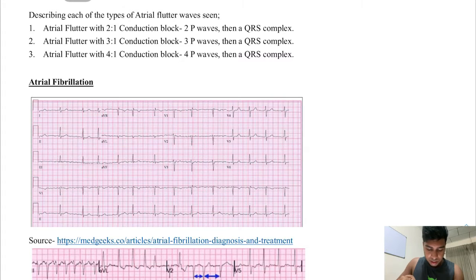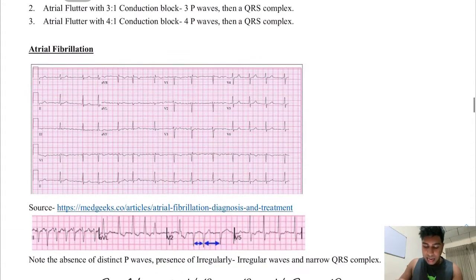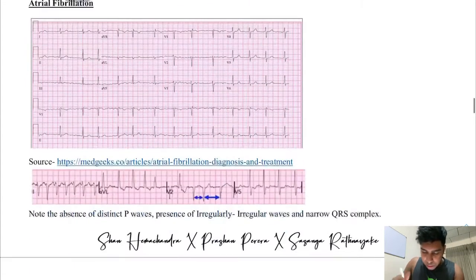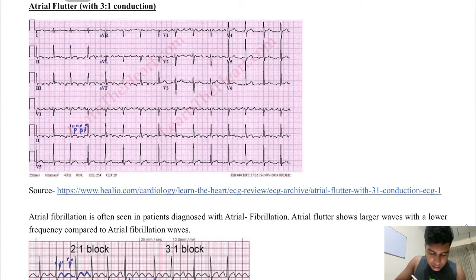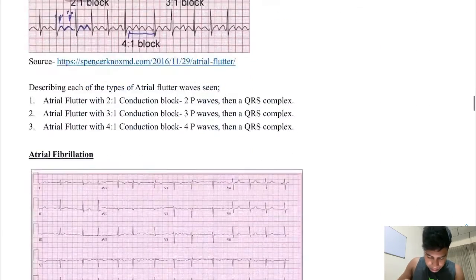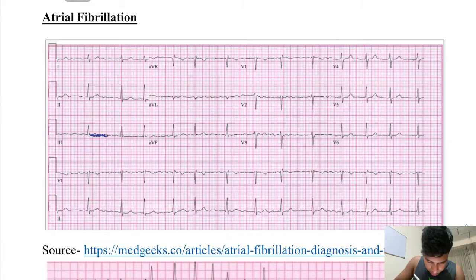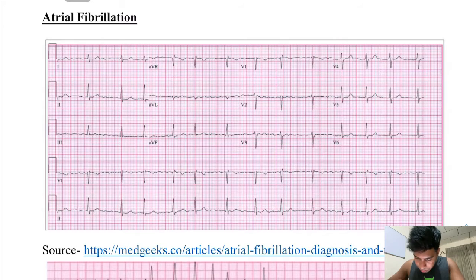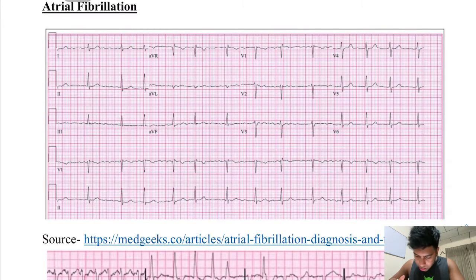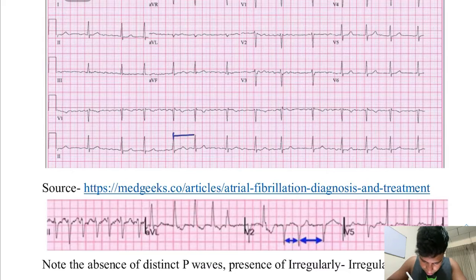Next, we have atrial fibrillation, and this is called an irregularly irregular wave. These waves are going to be smaller than that of atrial flutter. You can see the distinct sawtooth pattern in atrial flutter, but in atrial fibrillation you can't tell that — it's just irregular. This is due to multiple, several ectopic pacemakers. If you look carefully, you will see that the rate is not constant. This is an irregularly irregular wave.